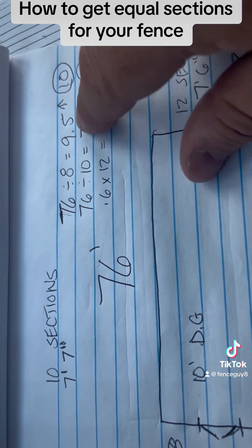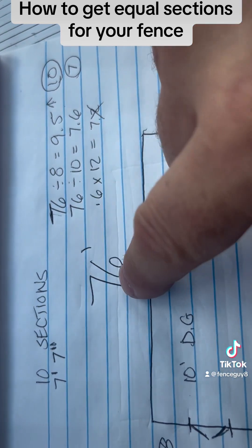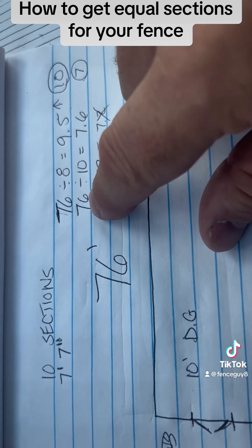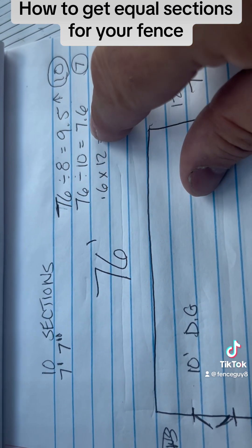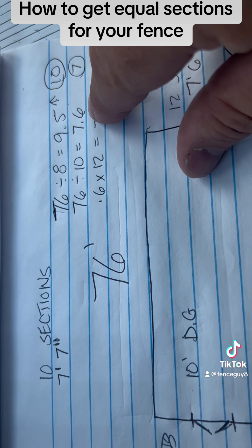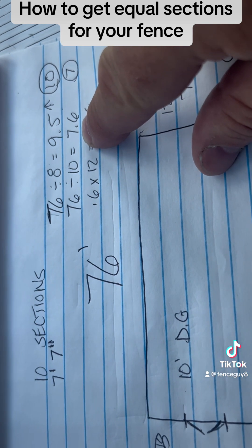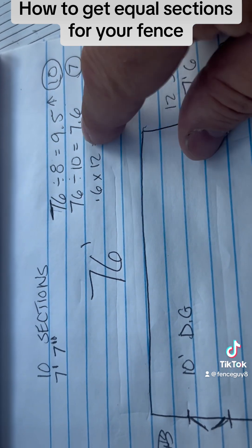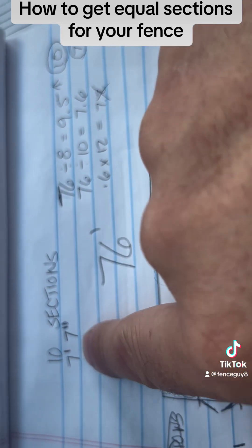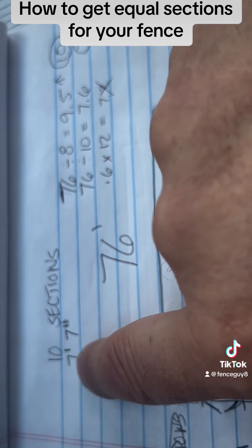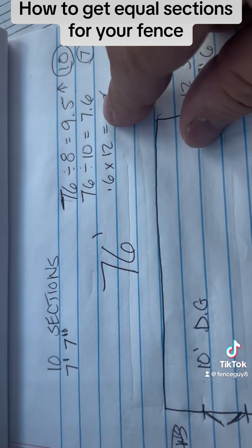So you take how many sections you have and you divide the footage by that. 76 divided by 10 is 7.6. So that first number right there, that's your feet. So I'm going to circle that so I know when I'm marking out my post, I'm going to be at 7 foot something.